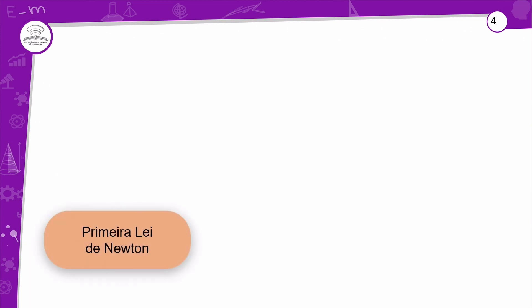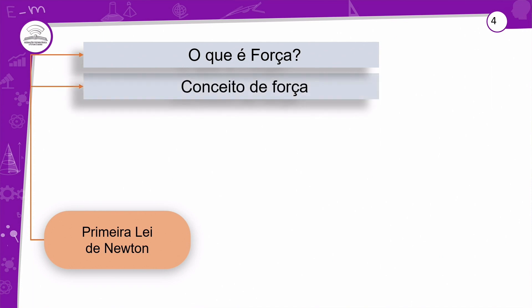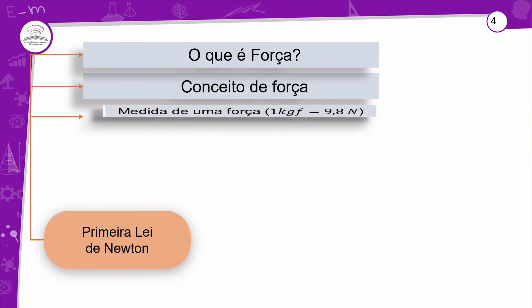Na primeira lei de Newton, que é o princípio da inércia, nós conceituamos o que é uma força. Vimos que é uma grandeza vetorial. Força e interação é o agente capaz de tirar o corpo do seu estado de equilíbrio. A medida da força pode ser em kgf — um kgf é 9,8 newton — porque temos a relação da gravidade, que é mais ou menos 9,8.